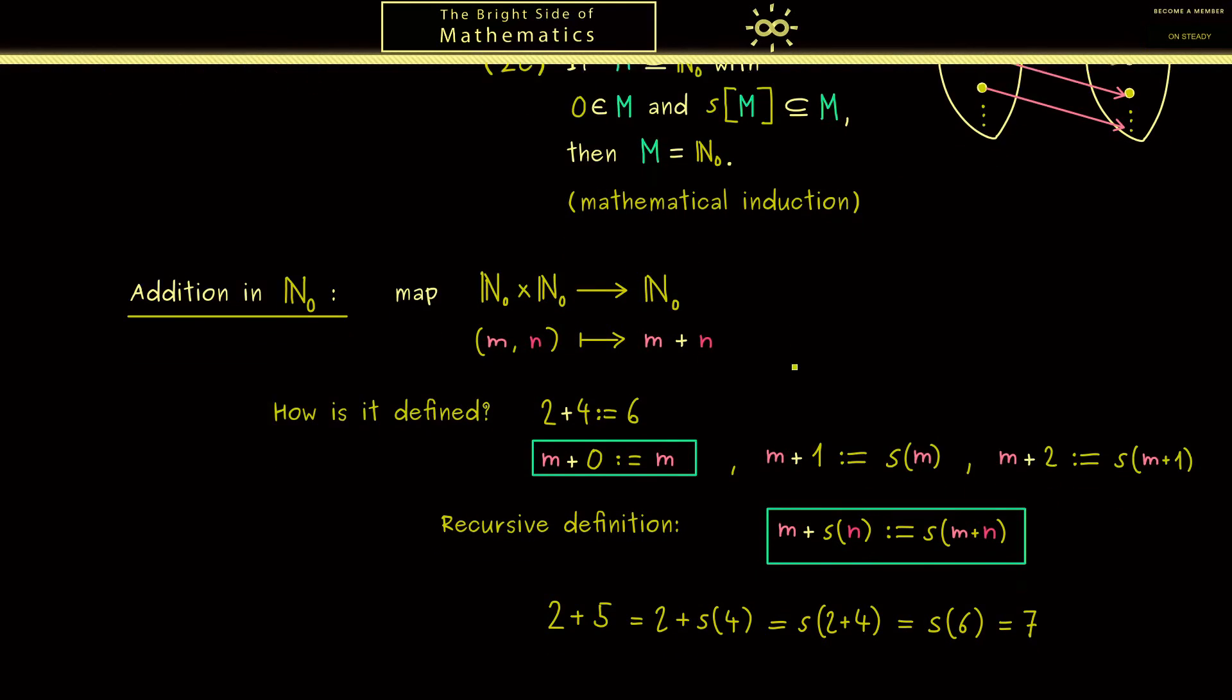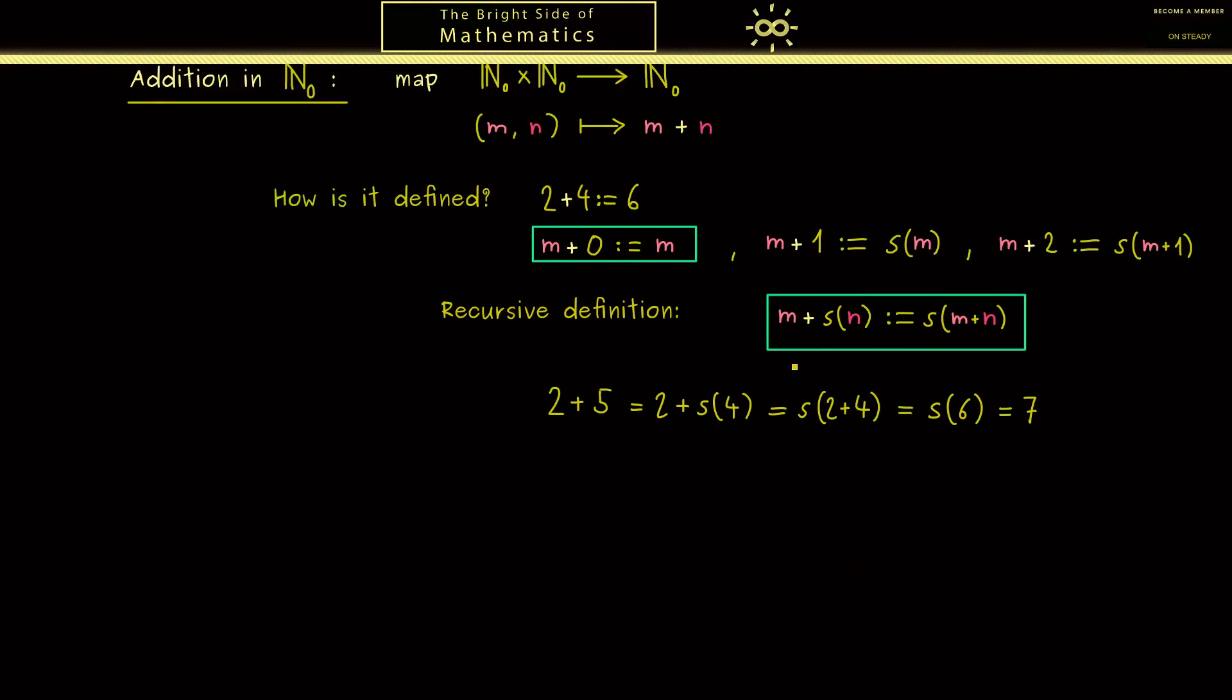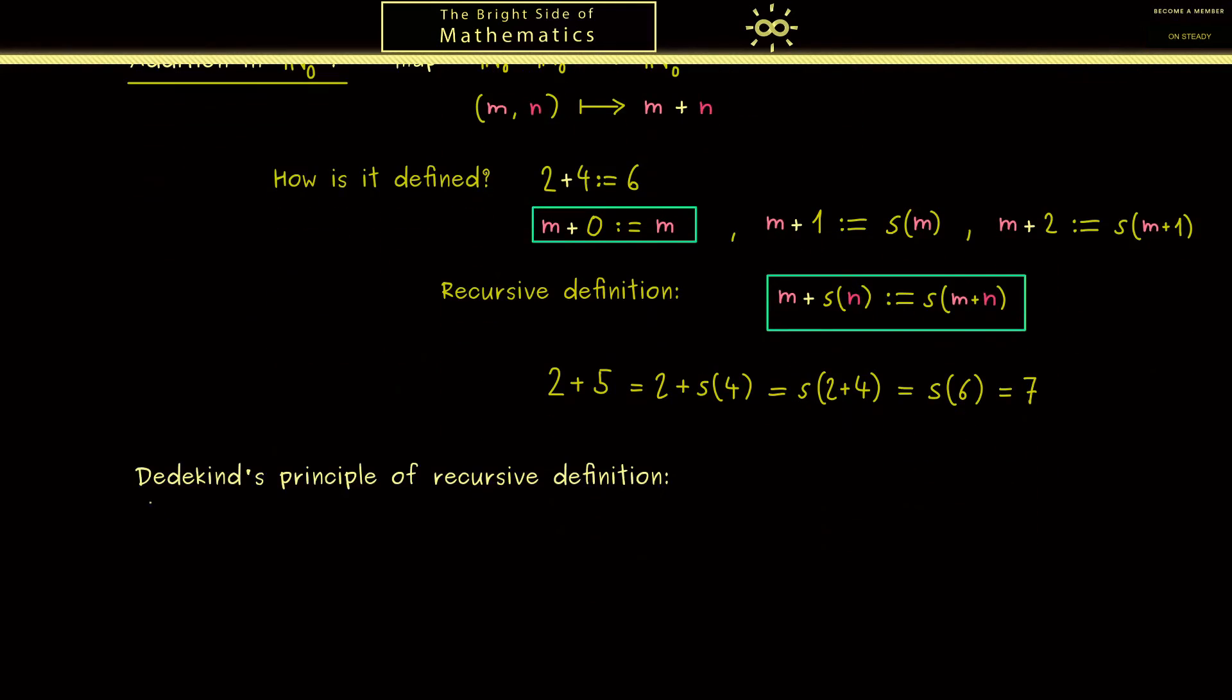I don't want to write down the proof, but I want to give you the general statement here. If we have any set capital A and a chosen element a and a map H from A into A, then there is a unique definition what it means applying H as often as you want it to a. In other words, we can give meaning to the progression a, H(a), H of H(a), and so on.